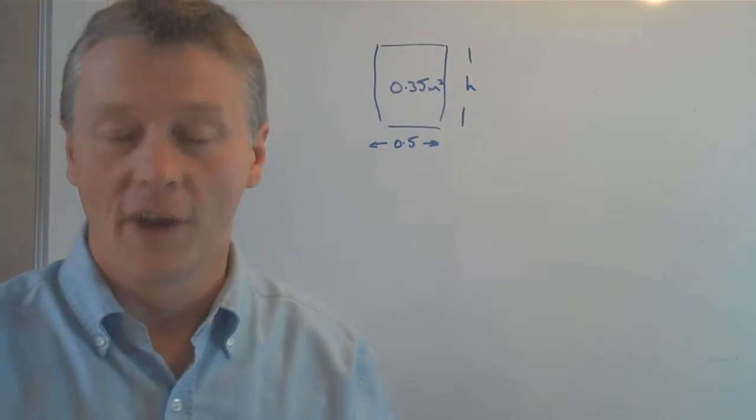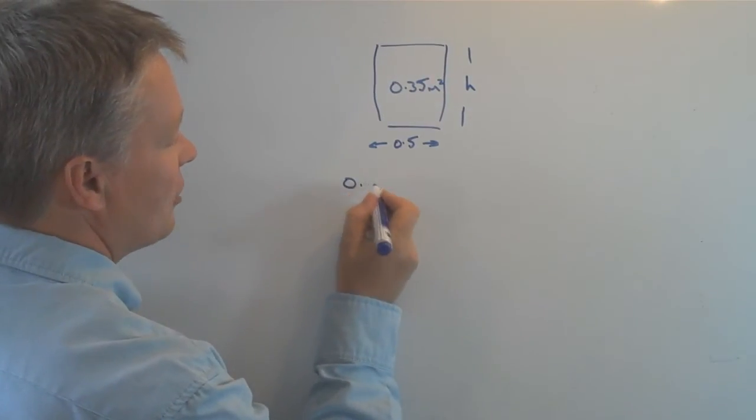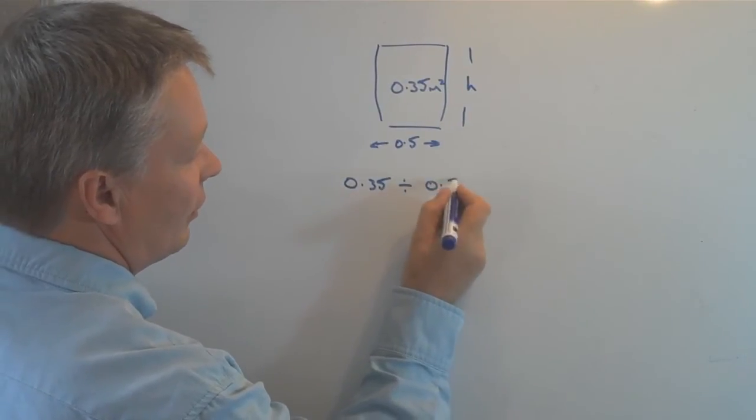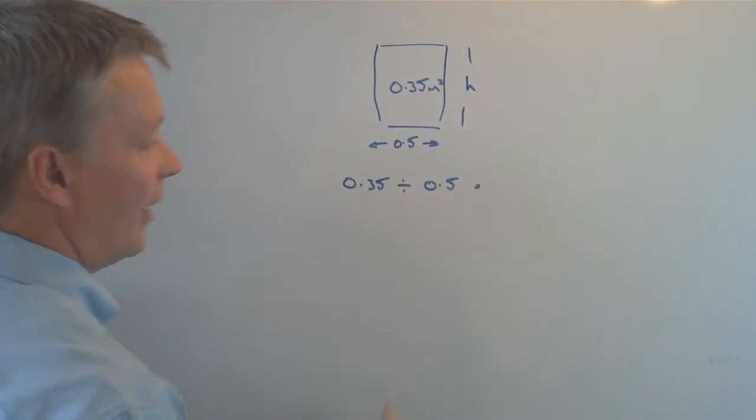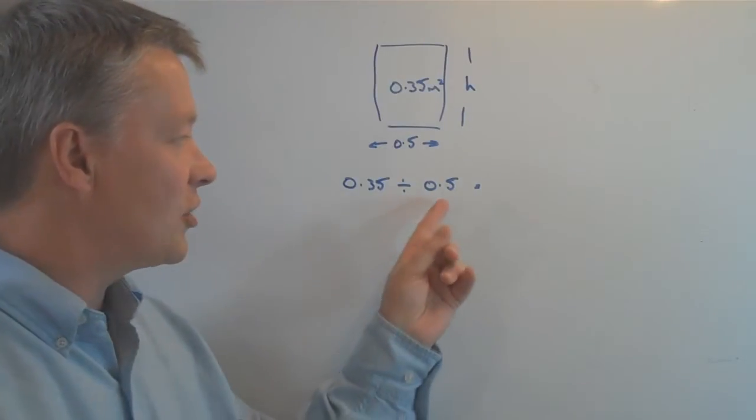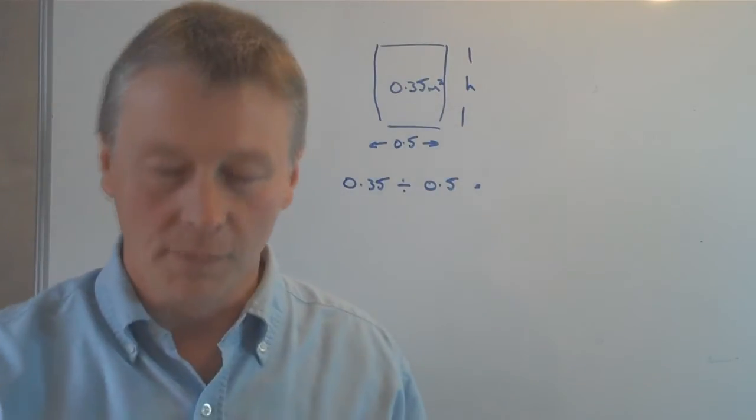So if I write that out: 0.35 divided by 0.5. The thing about dividing by decimals is that it's tricky because you have a decimal point there. Really, it's much easier if you can divide by whole numbers.